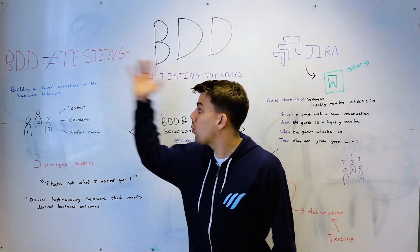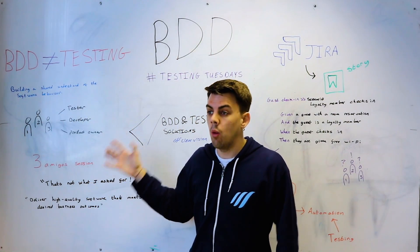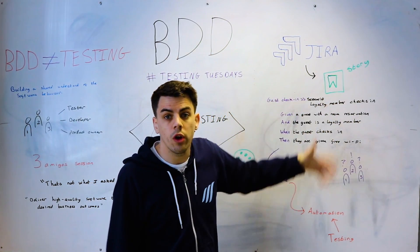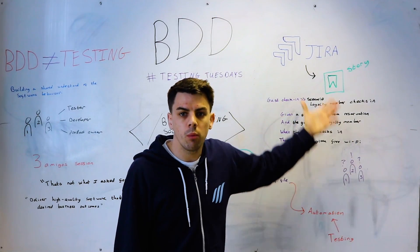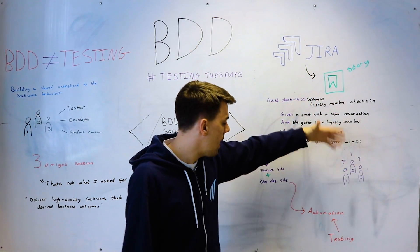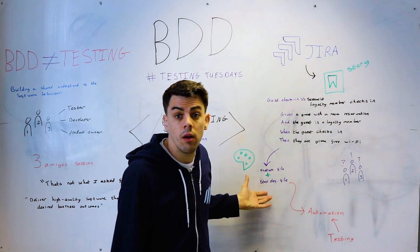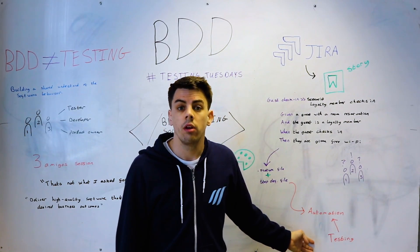After we've agreed upon the behaviours of our software, we go through this transition — we record it, we vote it, we are happy. We make sure we record everything for our software, and then we can start writing our code and start automating and testing.